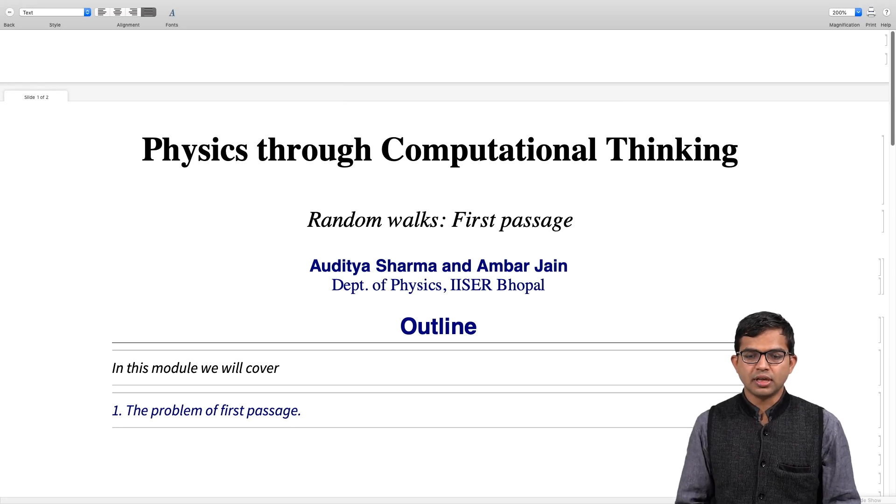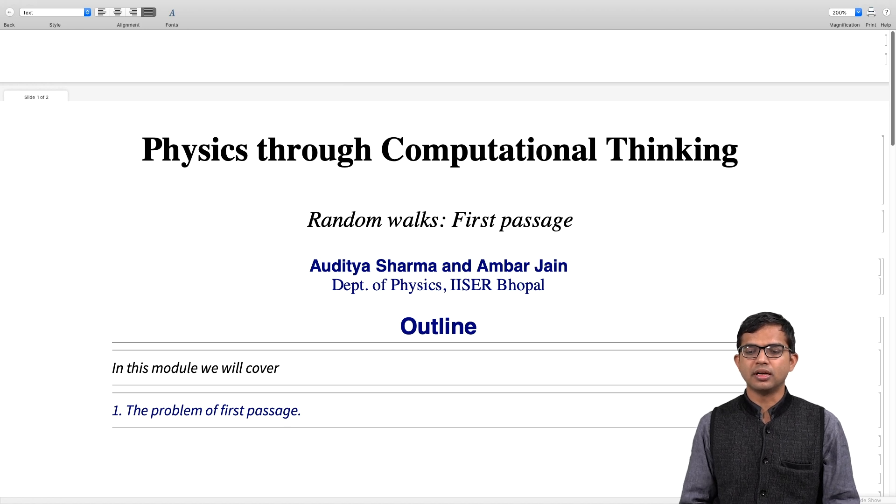Hello everyone. This is an offshoot of the discussion about random walks. I want to cover one application which I think is very nice and very neat, and with a little bit of mathematical skills, one can already see some very interesting results. So this is about so-called first passage processes in the problem of the random walk.